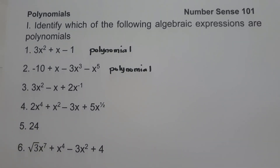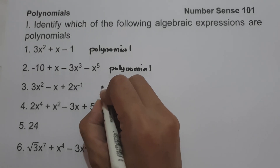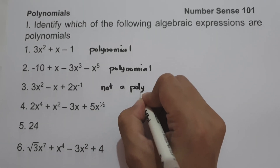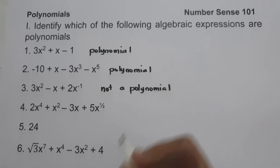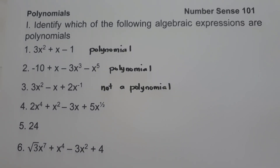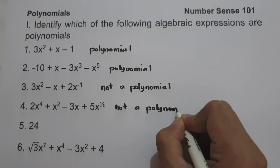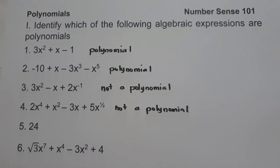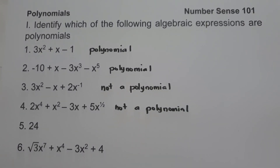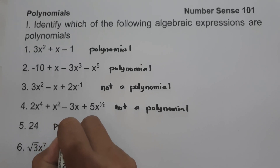Number 3: 3x squared minus x plus 2x raised to negative 1. Number 3 is not a polynomial simply because x in the third term has a negative exponent. Number 4: 2x squared minus 3x plus 5x raised to 1 half. Number 4 is not a polynomial because x in the fourth term has a fractional exponent. Number 5: 24. This one is an example of a monomial, so therefore it is a polynomial.